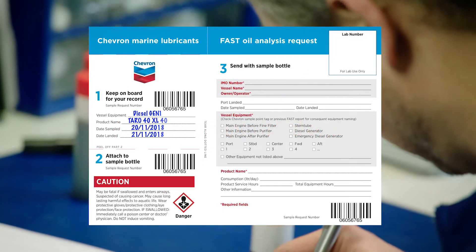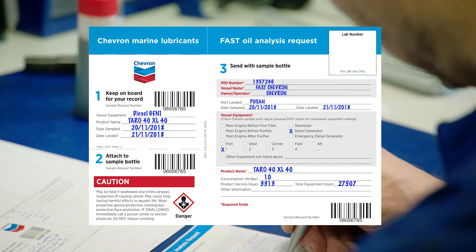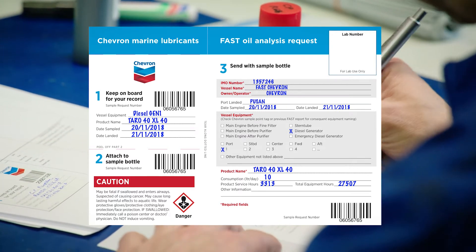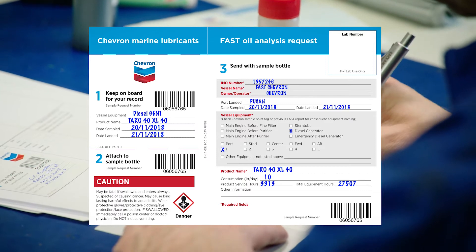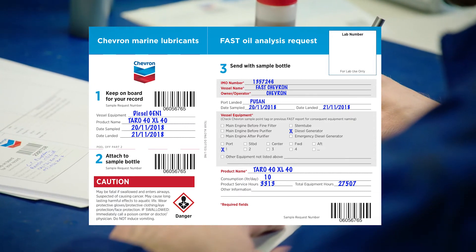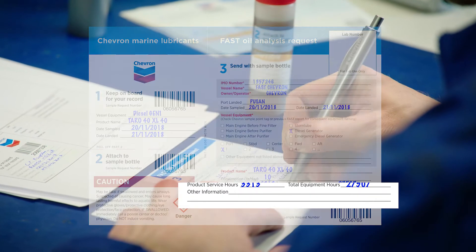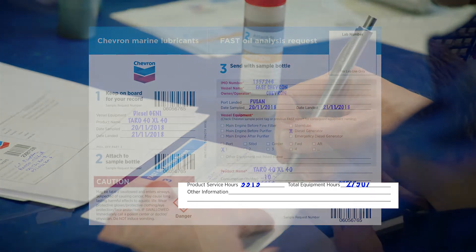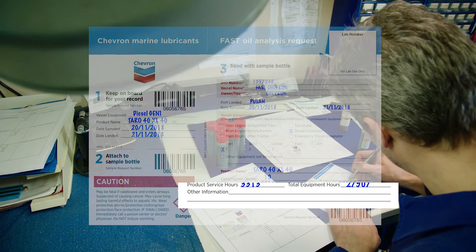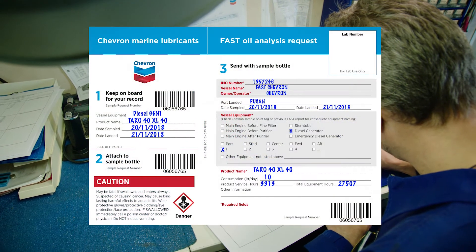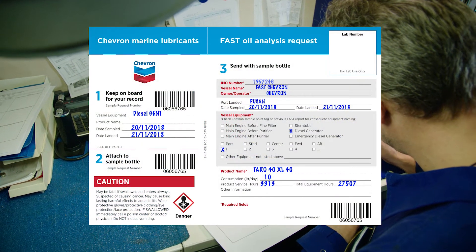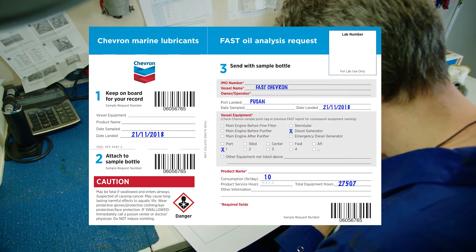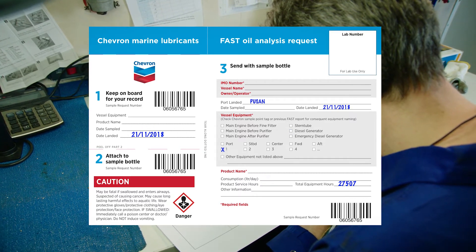Make sure that all necessary information is clearly written on the label that goes with the sample bottle. Use of consistent equipment names is critical for historical data trending. The field 'Other Information' is for requesting extra testing information related to mixed products and additional comments regarding equipment. Incomplete information on the labels can affect report status and result in a loss of comments and of historical trending data.